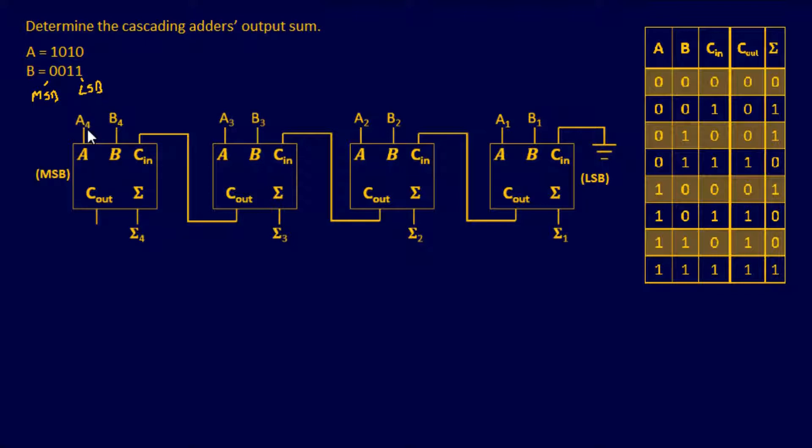If it's A4, that's our most significant bit. And then B4, most significant bit. And then A1, least significant. And B1, least significant. So we're going to input our A and B inputs right here, just as if we see it right over here.